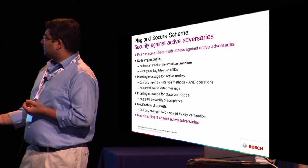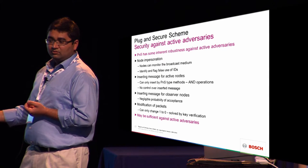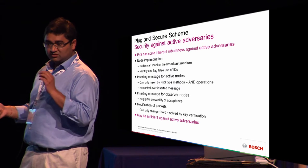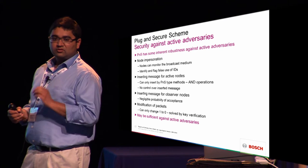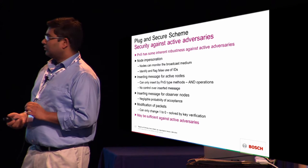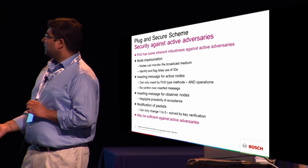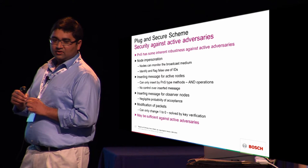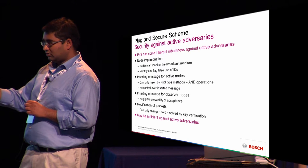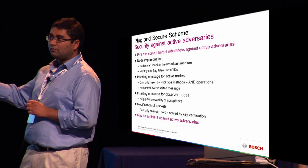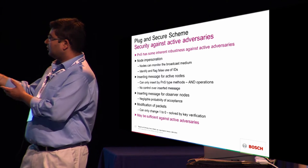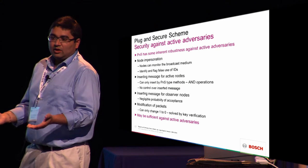If you want to insert messages for observer nodes, we can actually show that the probability that you can successfully craft a message which would be accepted is negligible. One of the advantages of CAN is you can only have transitions from one to zero — you cannot flip a zero to one. So it's a very restricted environment, and these are all properties that the CAN bus provides.